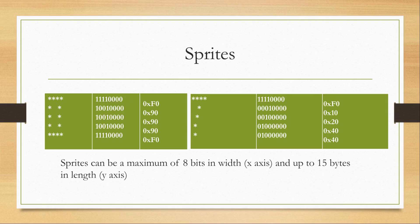Sprites can also be up to 15 bytes in length, which represents the y-axis — each byte is one row. So sprites are 8 bits in width and up to 15 bytes in length. We know the length of a sprite because there's a draw instruction in the Chip 8 instruction set where we specify how many rows to draw.